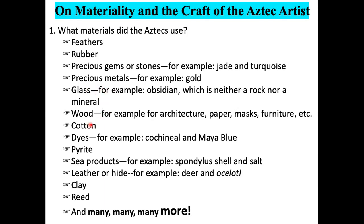The Aztec artists worked with wood, cotton to make clothing and other items, dyes including cochineal. They had numerous colors that they used for dyeing their textiles, but also for mural painting to paint the buildings and manuscripts as well. Pyrite, which had various uses, mostly in chemistry. Sea products, for example shell and salt, leather or hide, especially for making manuscripts. This is its own lecture, but here I included it to show the breadth of the materials and the items that they would have produced.